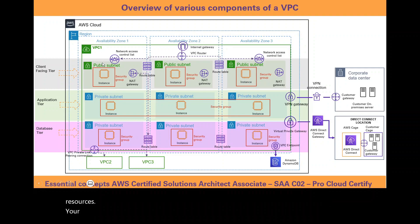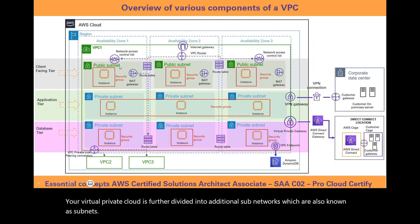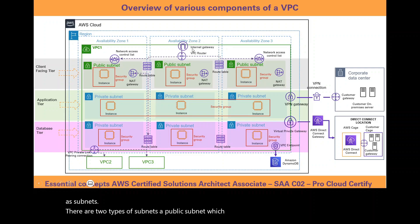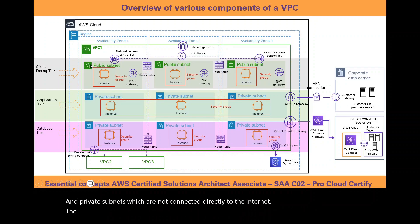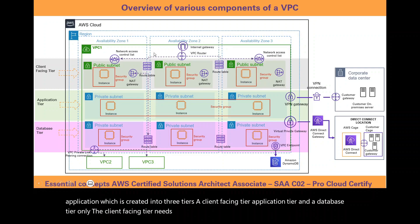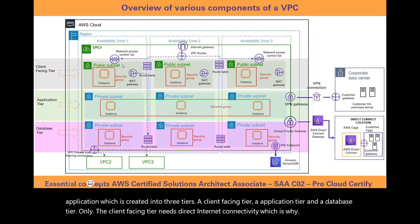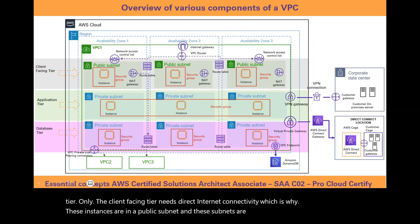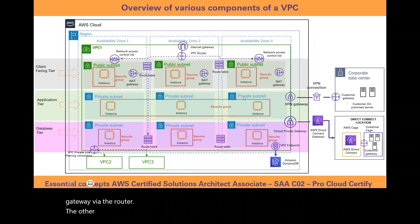Your virtual private cloud is further divided into additional sub-networks, also known as subnets. There are two types of subnets: a public subnet which is connected to the internet, and private subnets which are not connected directly to the internet. We have an application created into three tiers: a client-facing tier, an application tier, and a database tier. Only the client-facing tier needs direct internet connectivity, which is why these instances are in a public subnet connected directly to an internet gateway via the router. The other subnets are placed in private subnets.